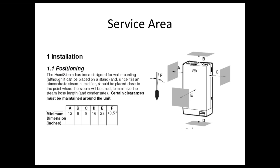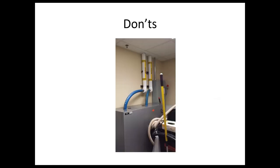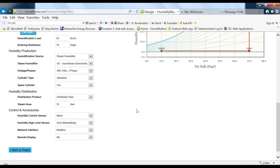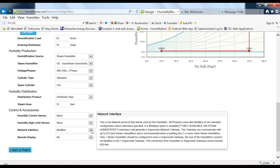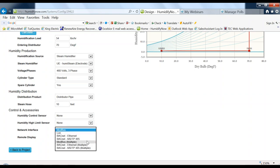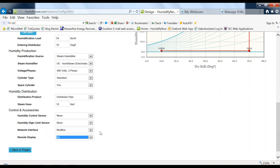Service area clearance is often overlooked. For the electrode model, you need 28 inches of clear space to pull out the steam canisters. If objects are placed in front, servicing becomes very difficult — something facilities staff will regret. For controls, you can specify various humidity sensors — duct or room mounted, modulating or on/off. Most commonly we see modulating. Correll's standard communication is Modbus, but BACnet and LonWorks controls are also available. A remote display can be specified if the unit is in a hard-to-access location.